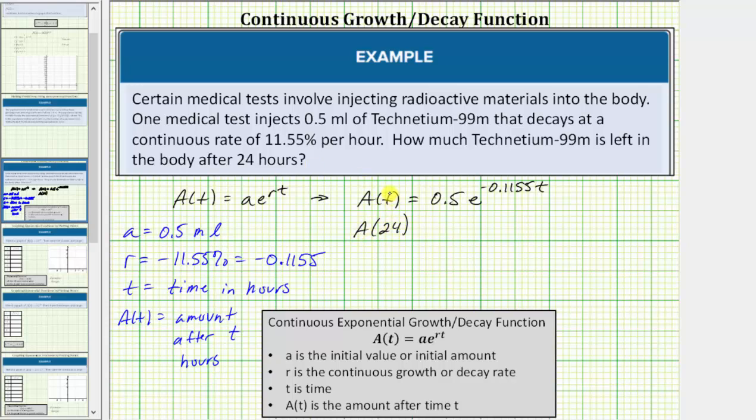Now we need to use the calculator to find A(24) = 0.5e^(-0.1155 × 24) to approximate the function value.